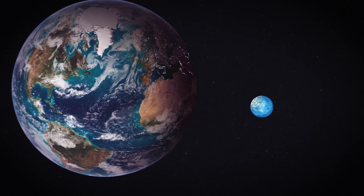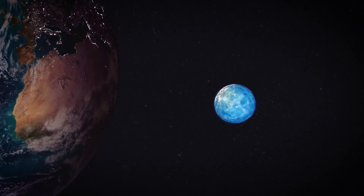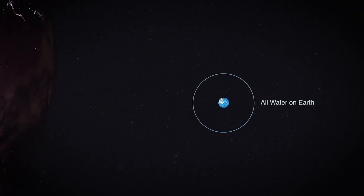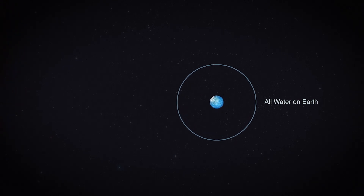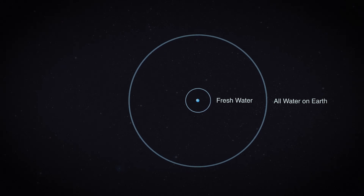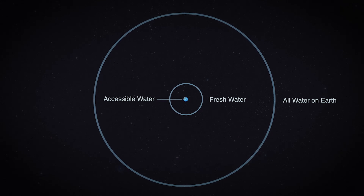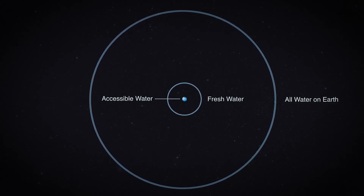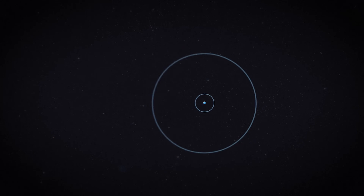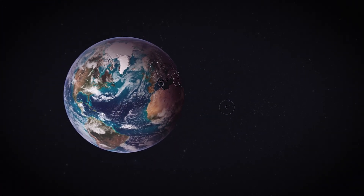About 97% of that water is salty, and about 2.5% is either locked in ice or really deep underground. When you get down to surface water — meaning water in lakes and rivers — that's very easily accessible and cheaply available, and that's only about 0.008% of the total quantity of water on earth. That's the water we're using to provide food, water, and energy to 7 billion people today, and by 2050 it'll be 9 billion people.